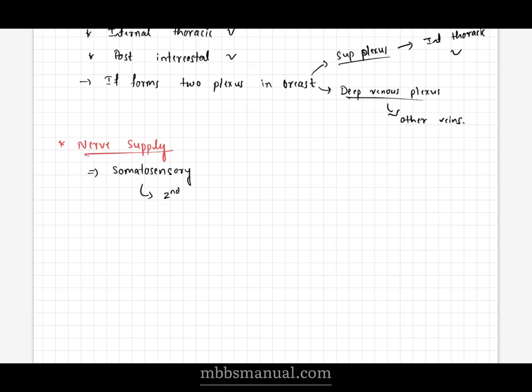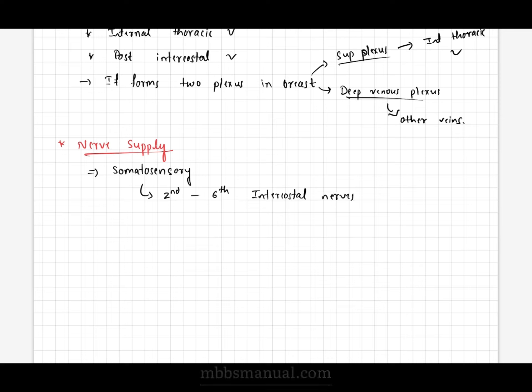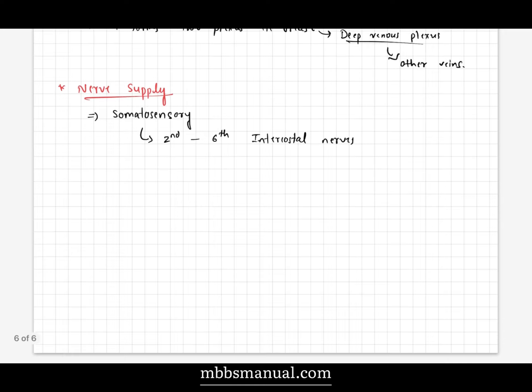Nerve supply: it is primarily somatosensory, derived from the second to sixth intercostal nerves through their anterior and lateral cutaneous branches.